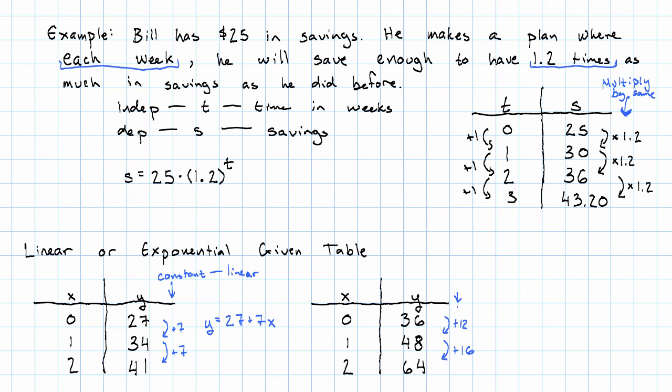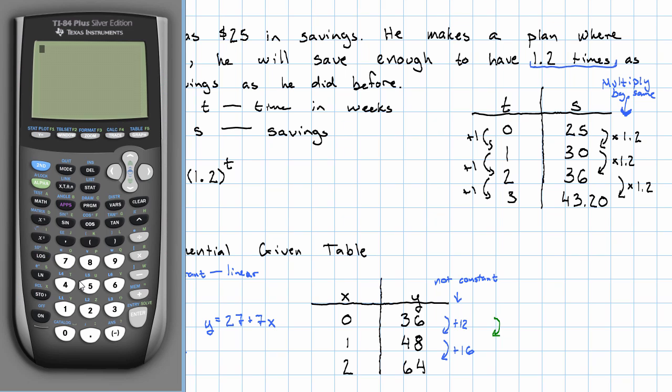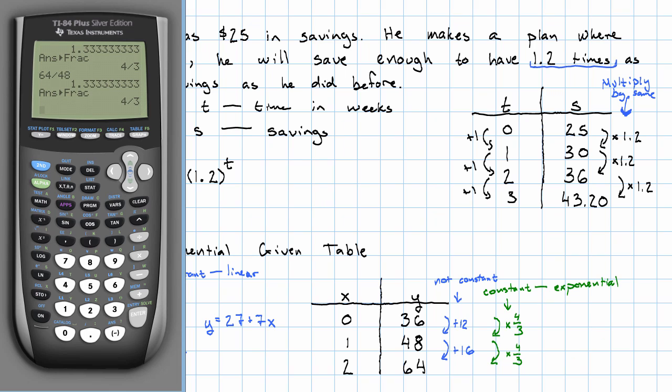But 12 and 16 are different. This is not constant. So next we calculate the ratio. What do we have to multiply 36 by to get 48? Using the calculator, 48 divided by 36, make it a fraction, here we multiplied by 4 thirds. And what do we have to multiply 48 by to get 64? 64 divided by 48, that's the same, make it a fraction. That's 4 thirds again. This is constant. So the relationship we have here is exponential.